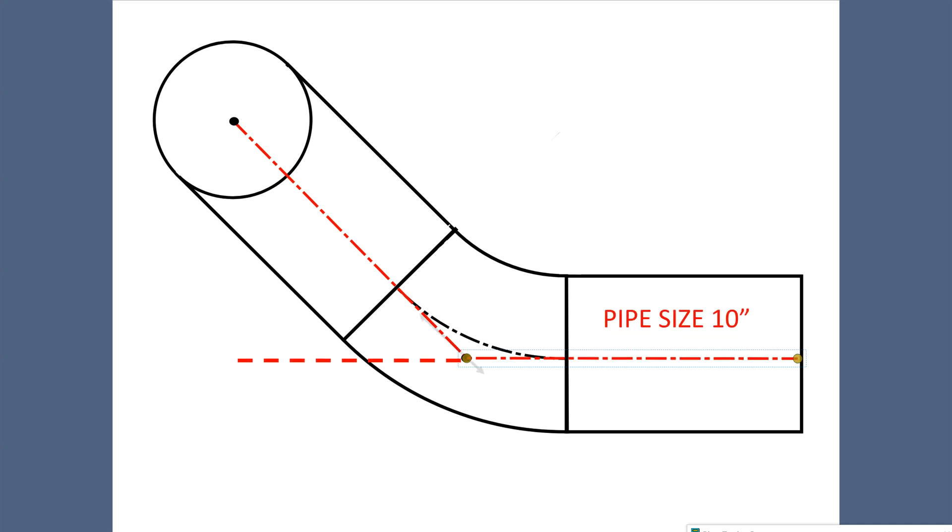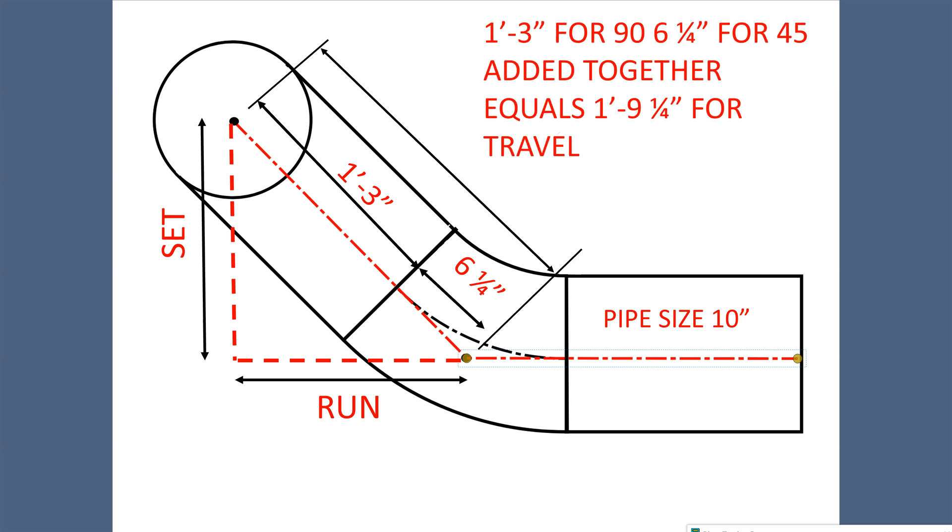So now we can add those two up. Our set and run are equal, one foot three for the 90. We got six and a quarter for the 45. And when we add them up, that will give us a travel of one foot nine and a quarter.